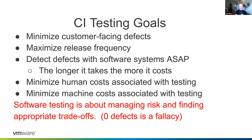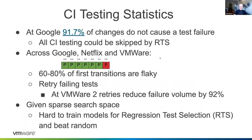Here are some interesting statistics about how this works. At Google, almost 92% of changes don't have a test failure that could be caught by any test you have. This means for most changes — 92% at Google — you could skip all the testing and you wouldn't miss a defect because the developer didn't submit one. Only 8% of changes were interesting in that they had a failure that could be detected by running a test.